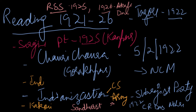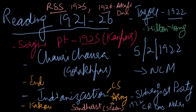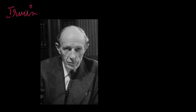A committee was formed for army reforms called the Sandhurst Committee, also known as the Skeen Committee — S-K-E-E-N. Many committees were formed under Reading: for currency reforms in India, the Hilton Young Committee was formed; for civil services, it was the Lee Commission.